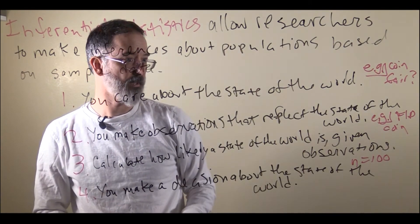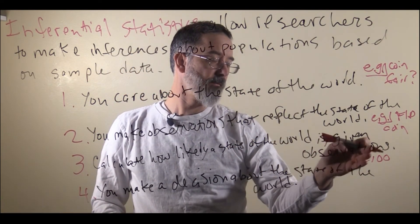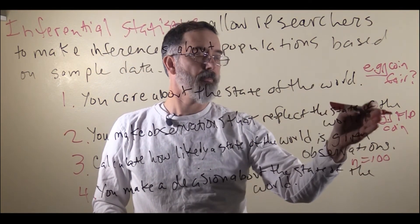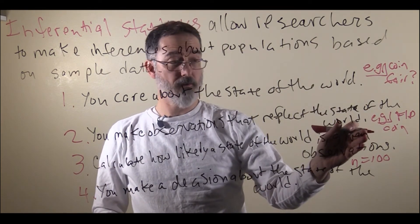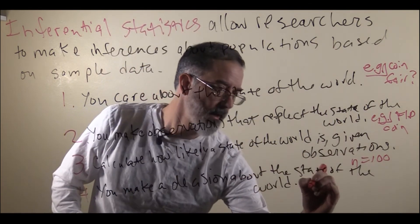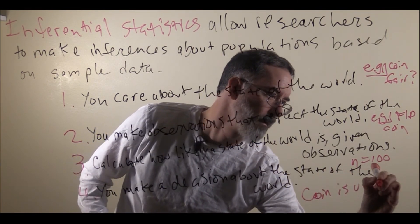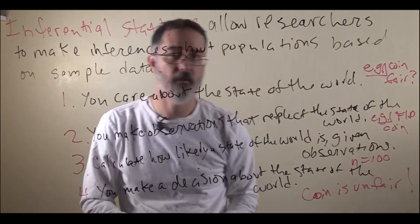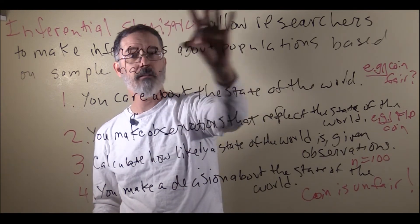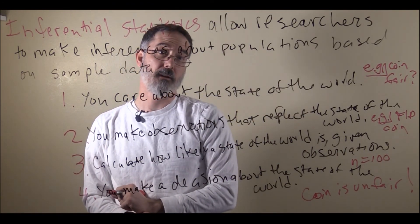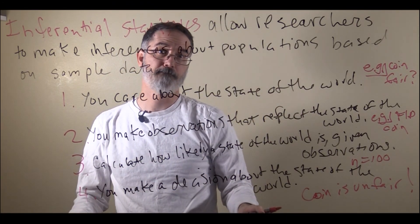Then you make a decision about the state of the world. So if you flip the coin 100 times and it came up heads all 100 times, you would decide that the coin is unfair. This is the overall logic behind all of the inferential statistics that we are going to be talking about for the rest of the semester.